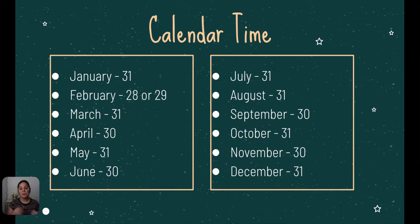March has 31 days, April has 30 days, May has 31 days, and June has 30 days.